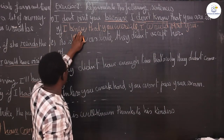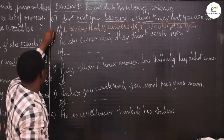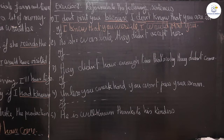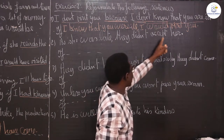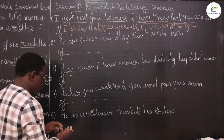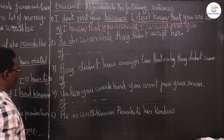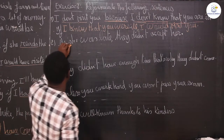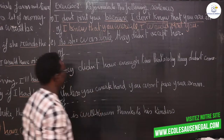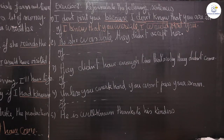So you have here: 'If I knew that you were ill, I would visit you' — if-clause, second form. The second sentence is: 'As she was late, they didn't accept her.' The connecting word here is 'as'. Where is the cause? The cause is always on the right — 'as she was late' is the cause. They didn't accept her.